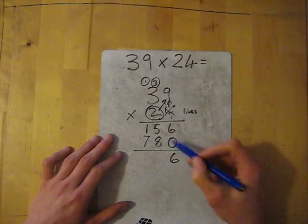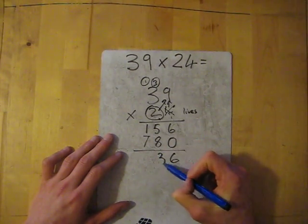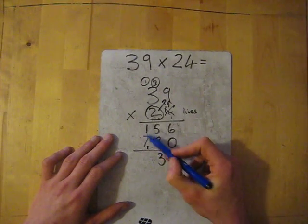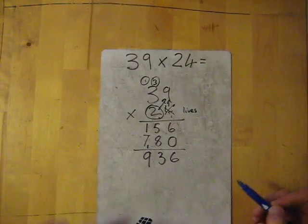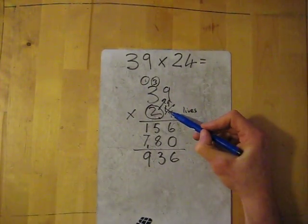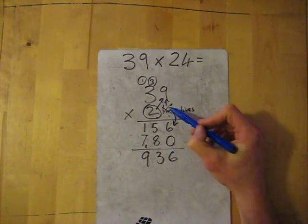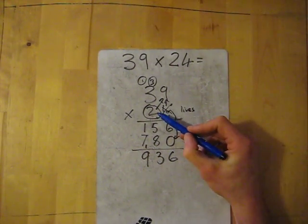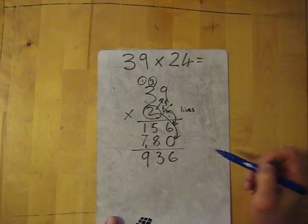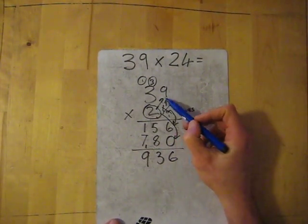So six add zero, six. Eight add five, that's 13. Carry the one. Seven add one, it gives me nine. So you've got life one, and then you've got life two. And because it's a 20, you add a zero. And each of these lives kills all the numbers above. We'll do another one.